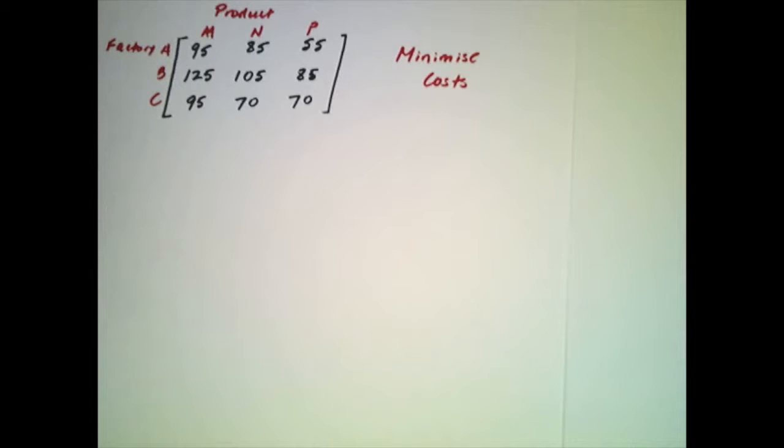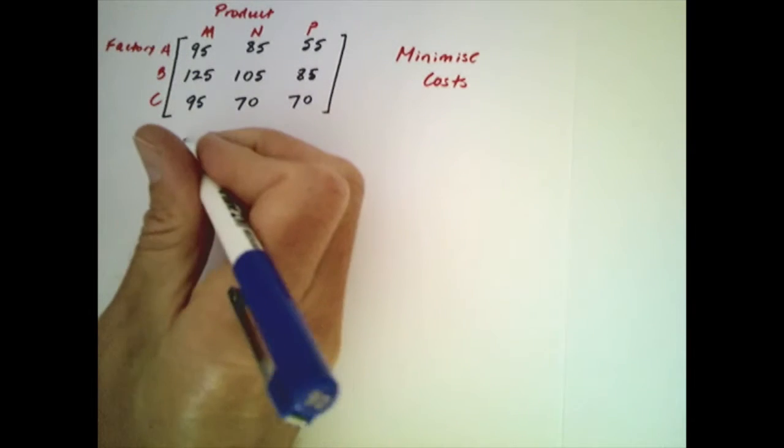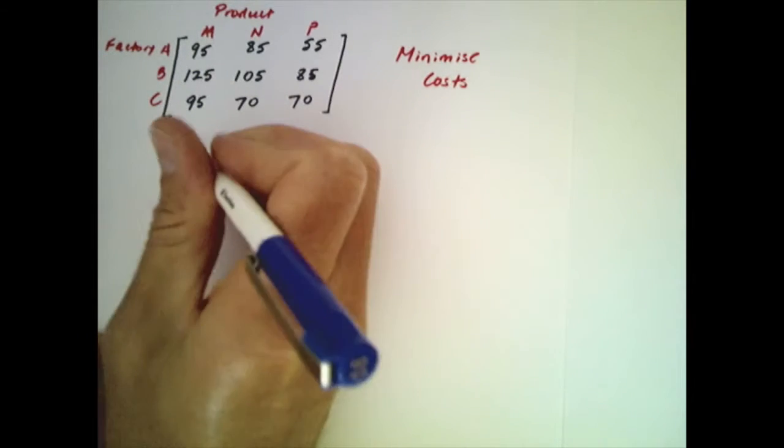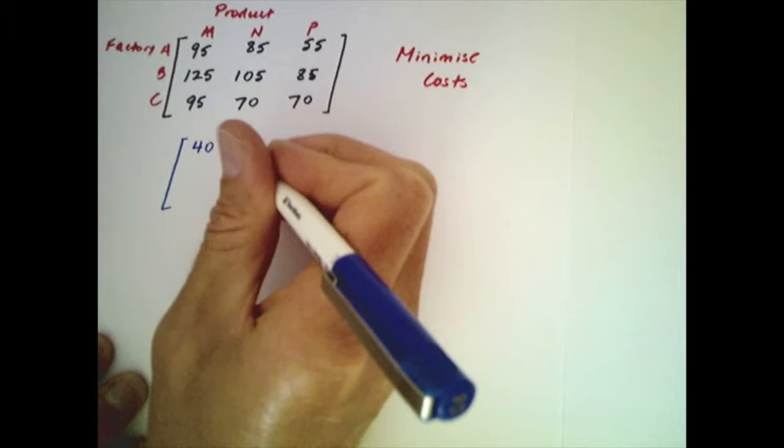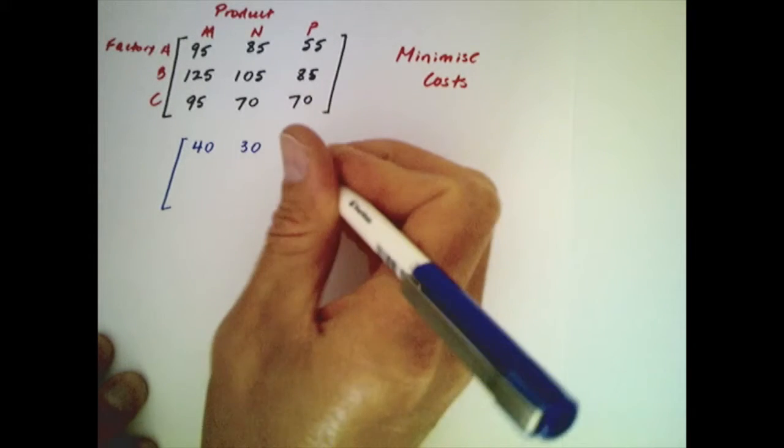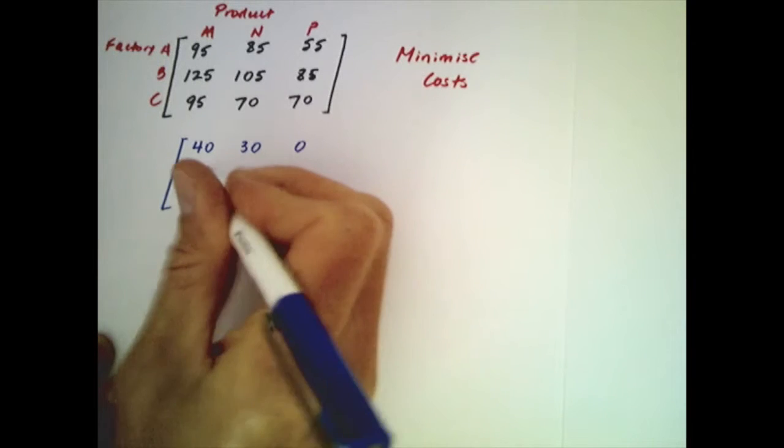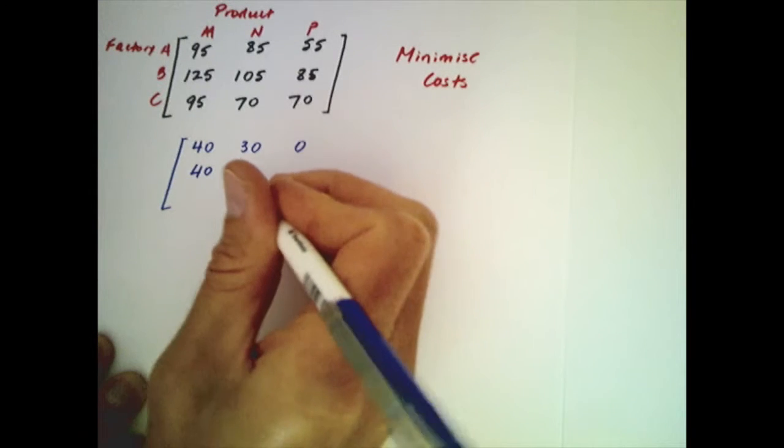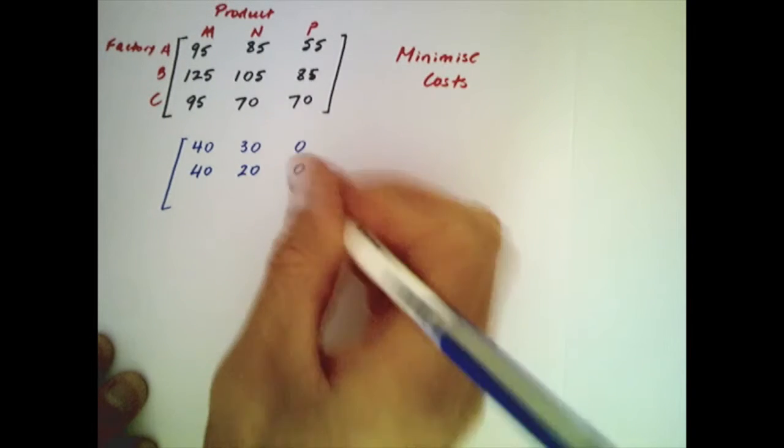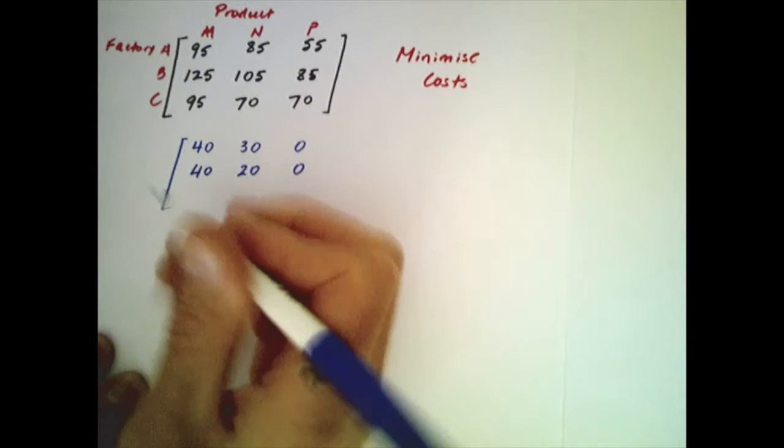In this case as before in the previous Hungarian algorithms what we do is we look at each row and we select the smallest entry in each row. When we've done that we subtract it from all the entries in that row. So we're subtracting 55 from each entry in the first row, in the second row we'll subtract 85 from each entry, and in the third row we'll subtract 70 from each entry.